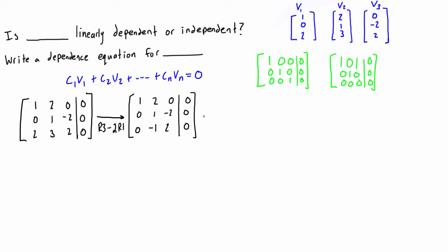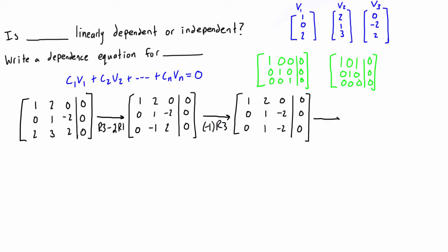Next, multiply row 3 by negative 1 to switch the signs. Then do r3 minus r2. The first two rows are unaffected, and for row 3: 0 - 0 = 0, 1 - 1 = 0, -2 - (-2) = 0, and 0 - 0 = 0. Row 3 becomes all zeros.